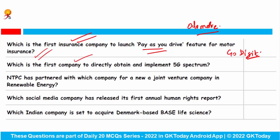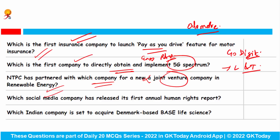Which is the first company to directly obtain and implement 5G spectrum? This is Larsen & Toubro Technology, the first technology company to publicly express its interest in the government's direct allocation of spectrum for a captive 5G network. L&T is specialized in engineering and research and development. NTPC has partnered with Indian Oil Corporation Limited to develop a new joint venture company in the renewable energy field.